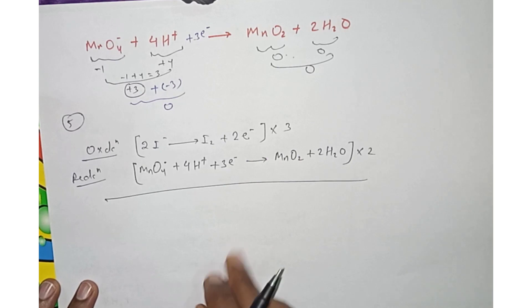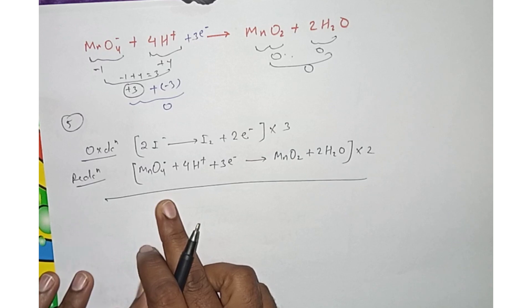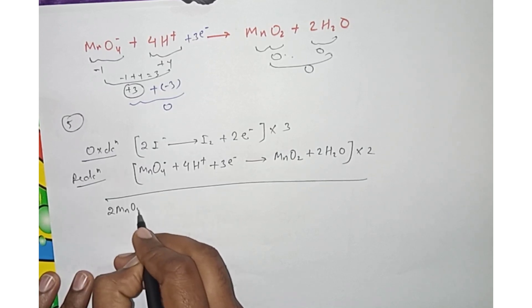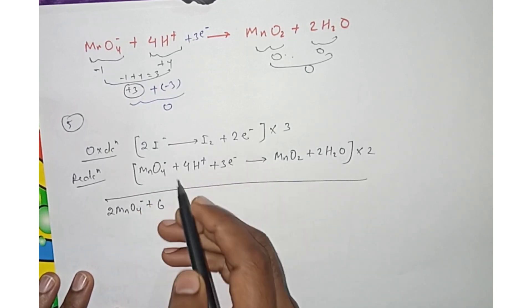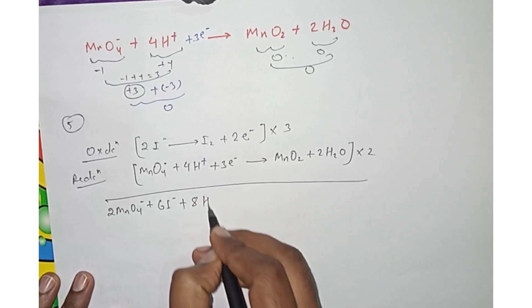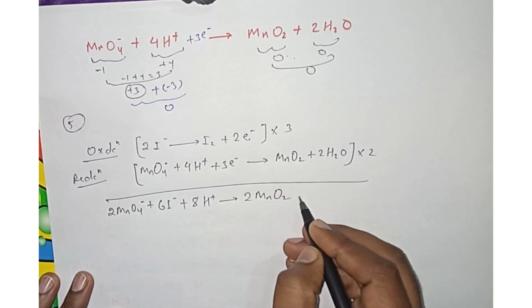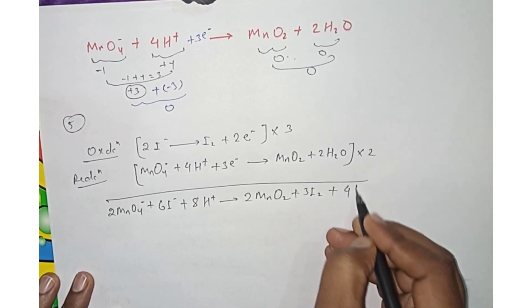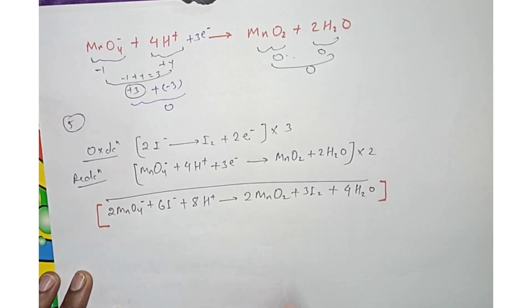Multiply and combine: 2MnO4⁻ plus 6I⁻ plus 8H⁺ → 2MnO2 plus 3I2 plus 4H2O. Cancel common terms and the equation is balanced.